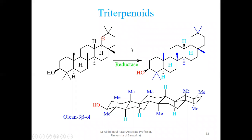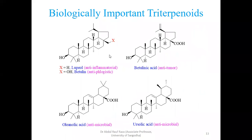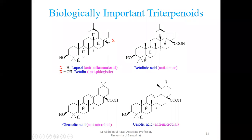Further, many enzymes can work to generate different natural products from this basic precursor. Triterpenoids are reported to be biologically very active. I have highlighted just a few structures to show their biological importance.